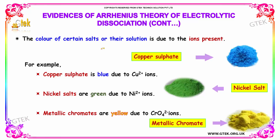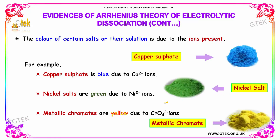The color of certain salts or their solution is due to the ions present. For example, copper sulfate is blue due to the Cu²⁺ ions, and nickel salts are green due to Ni²⁺ ions. Metallic chromates are yellow due to CrO₄²⁻ ions.